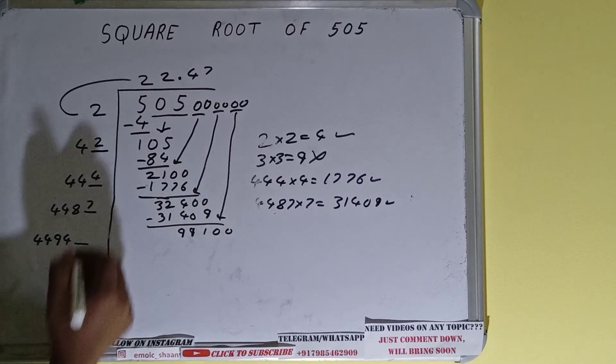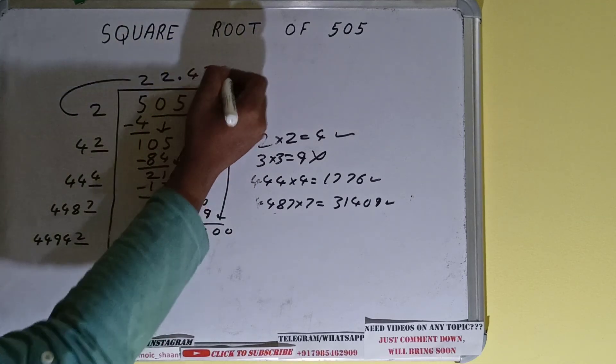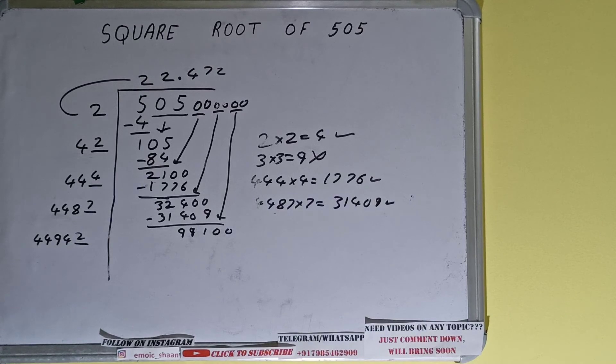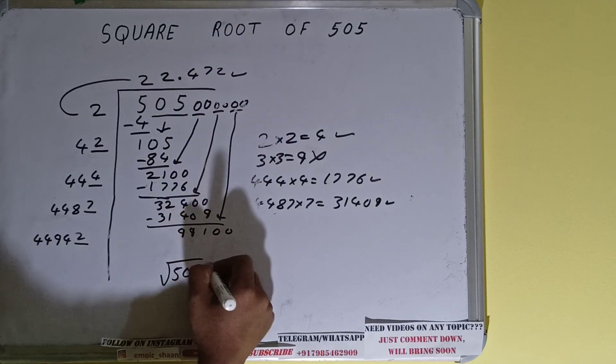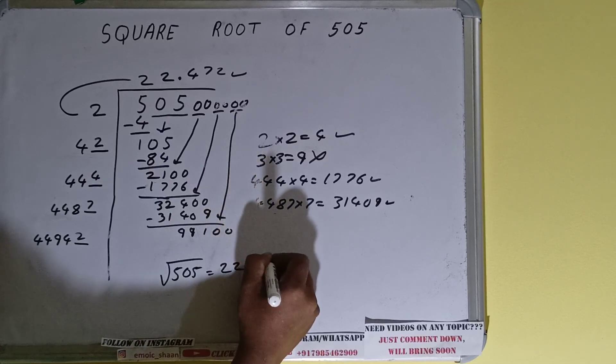We can try two times. So 2 here and 2 here, but we don't need to calculate because we got the answer correct up to three decimal places. So square root of 505 will be 22.472, and that would be the answer.